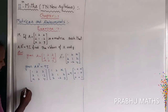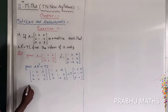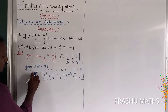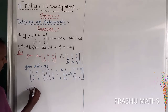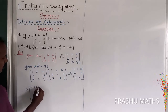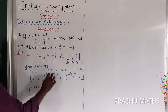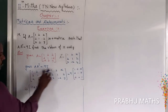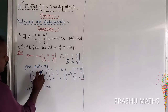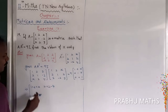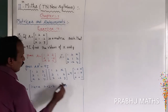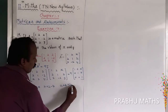Now performing the matrix multiplication. First row, first column: 1×1 + 2×2 + 2×2 = 1 + 4 + 4 = 9. First row, second column: 1×2 + 2×1 + 2×(-2) = 2 + 2 - 4 = 0. First row, third column: 1×X + 2×2 + 2×Y = X + 4 + 2Y.